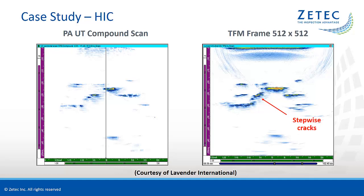The different blisters, essentially perpendicular to the ultrasonic beams, are very good reflectors. But the raw sector scan doesn't show the complete detail of the damage. The data from the live TFM inspection provides a more accurate image of the stepwise internal cracks that connect the adjacent hydrogen blisters. In this case, the superior imaging of the TFM technique is obtained by the better focusing capability, but also because the original FMC data recording includes signals from a multitude of insonification angles on the reflectors that compose the damage.